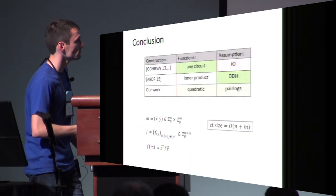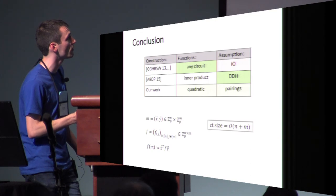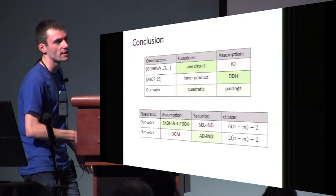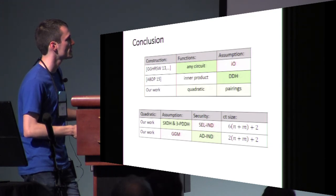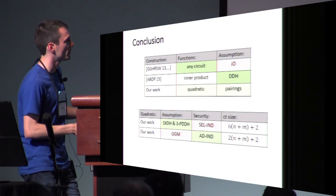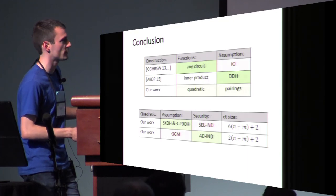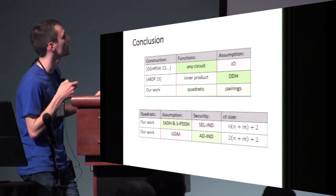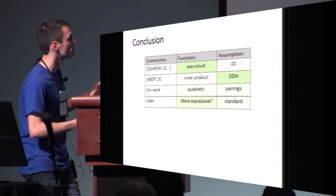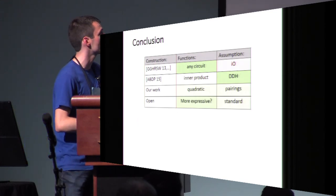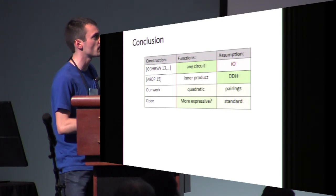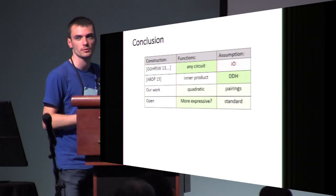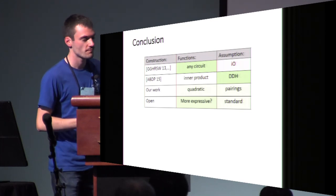To conclude, we built an FE scheme for quadratic functions with ciphertext size linear in N plus M from pairings. We have two schemes: one adaptively secure and one selectively secure, based on different assumptions, with ciphertext size measured in number of source group elements. As an open question, it would be interesting to explore, from standard assumptions such as pairings, what more expressive classes of functions could be achieved. That concludes my talk.